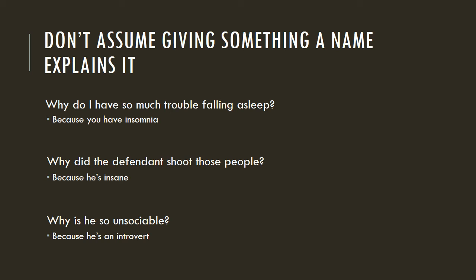Why did the defendant shoot those people? Because he's insane. No — just calling him insane does not explain it. There are a lot of reasons why someone might do something. Why is he so unsociable? Because he's an introvert. Again, no. None of these provide an explanation. Assuming someone is an introvert just because they're unsociable is small-minded and definitely a pitfall to critical thinking. Please be smarter than that.